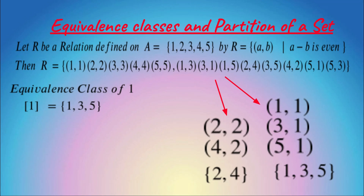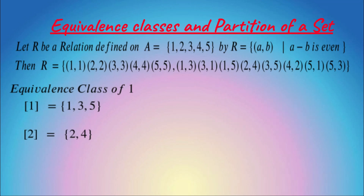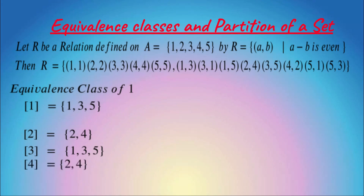The equivalence class of 2 is {2, 4}. You can check that the equivalence class of 3 is {1, 3, 5}. The equivalence class of 4 is {2, 4} — it repeats. Similarly, equivalence class of 5 is {1, 3, 5} — it repeats here.